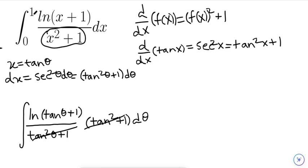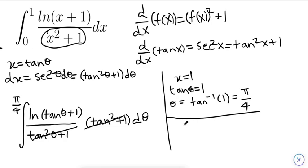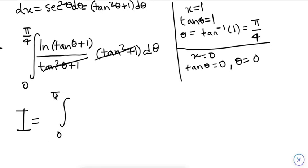Now what about the bounds? The original integral was from x = 0 to x = 1. When x = 1, we have tan(θ) = 1, so θ = arctan(1) = π/4. That's our upper limit. For the lower limit, x = 0 gives tan(θ) = 0, so θ = 0. Our simplified integral I is the integral from 0 to π/4 of ln(tan(θ) + 1) dθ.